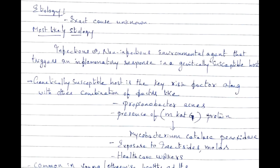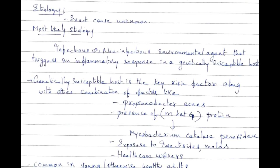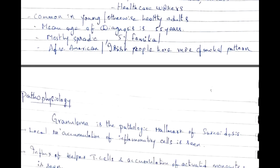Regarding etiology, the exact cause is not known. The most likely etiology is an infectious or non-infectious environmental agent that triggers an inflammatory response in a genetically susceptible host. Key risk factors include Propionibacterium acnes infection, presence of mKatG protein (mycobacterium catalase peroxidase), and exposure to insecticides and molds. Healthcare workers are at high risk. The mean age of diagnosis is 55 years; mostly sporadic, with 5% familial incidence. It is most common in Afro-American and Irish people.